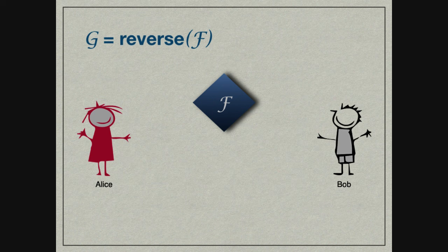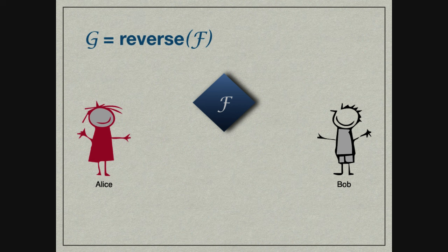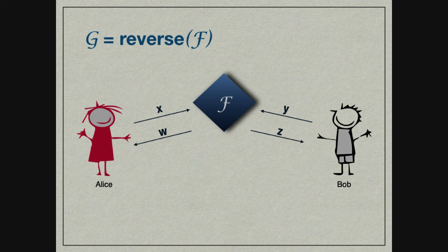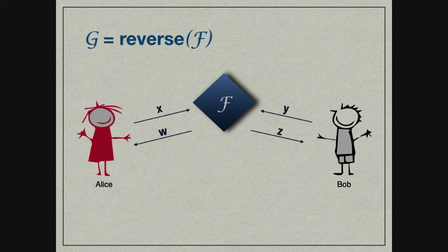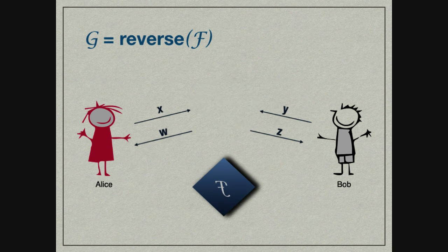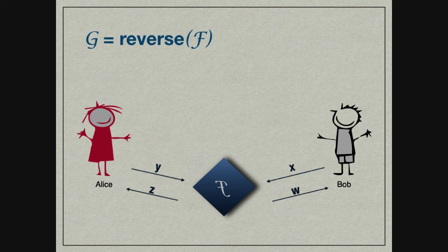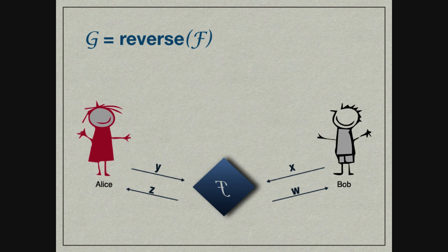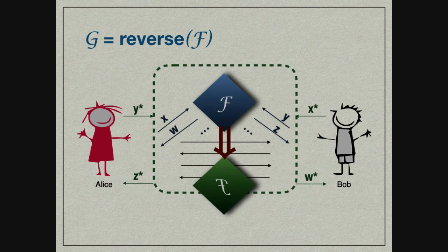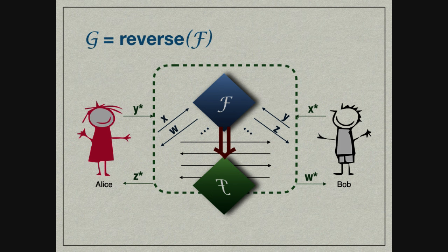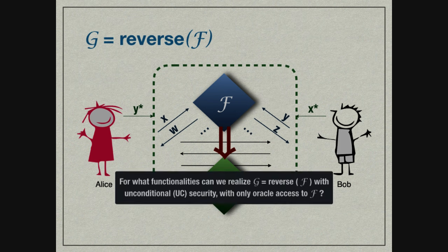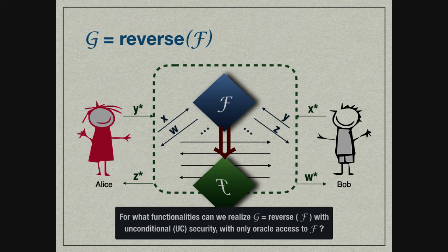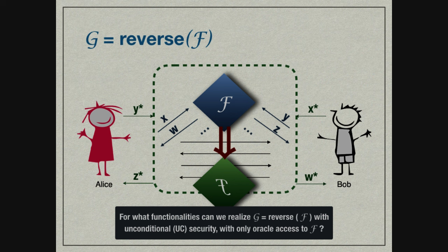The focus of our work is a related question: Suppose Alice and Bob have Oracle access to ideal functionality F, can they use it to implement the reversed functionality? Where Alice sends input Y, Bob sends input X, Bob gets output W, and Alice gets output Z. This sounds like a really natural question: when can you reverse a functionality securely?